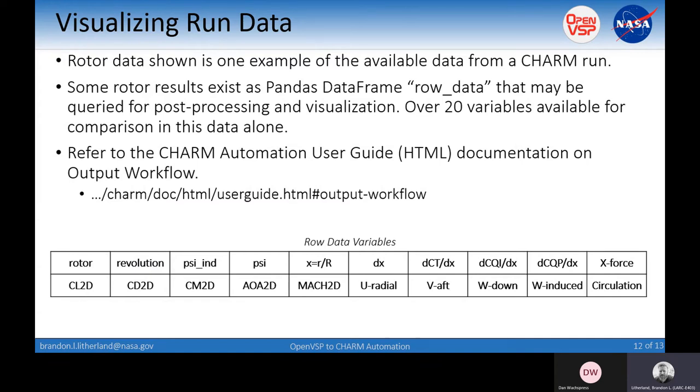The rotor data is just one example of the data from a CHARM run. We can't go all the way down into the depth of how much information is really available. These rotor results can exist as a pandas data frame. There's over 20 variables available just for this data block alone. There is a CHARM automation user guide written in HTML that should build with the workflow. It will walk through the documentation on what each of these inputs are, what you can do to alter them. It's a very useful tool.